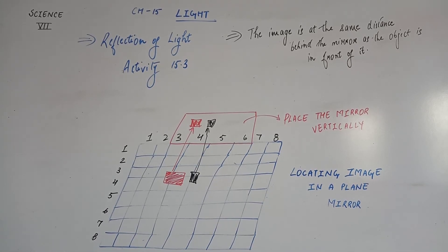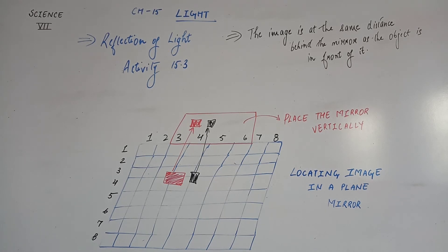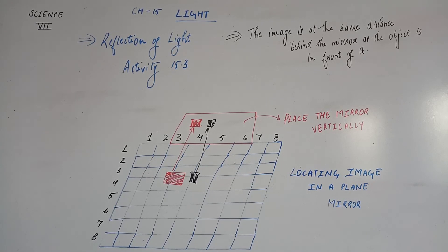The image is at the same distance behind the mirror as the object is in front of it. From the previous activities, we know that the object in front of the mirror forms an image at the same distance behind the mirror.